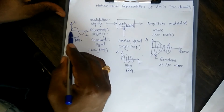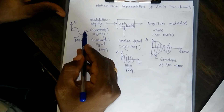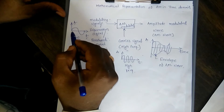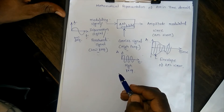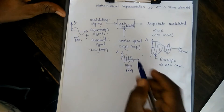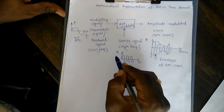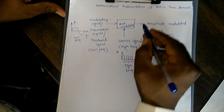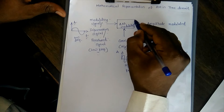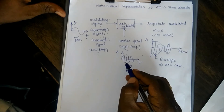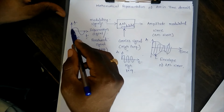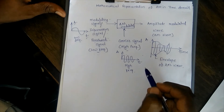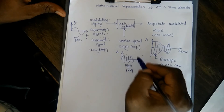What we observe here: suppose this is a low frequency modulating signal or the information signal which we want to transmit. On the X axis it represents time, on the Y axis it is the amplitude or the voltage level of that particular low frequency modulating signal. Similarly, if we draw a waveform for the carrier signal, on the X axis it is time, on the Y axis it is amplitude — a high frequency signal plotted with respect to time versus amplitude. In amplitude modulation, the amplitude of the carrier gets varied with respect to the instantaneous change in amplitude of the modulating signal, keeping phase and frequency of the carrier constant.